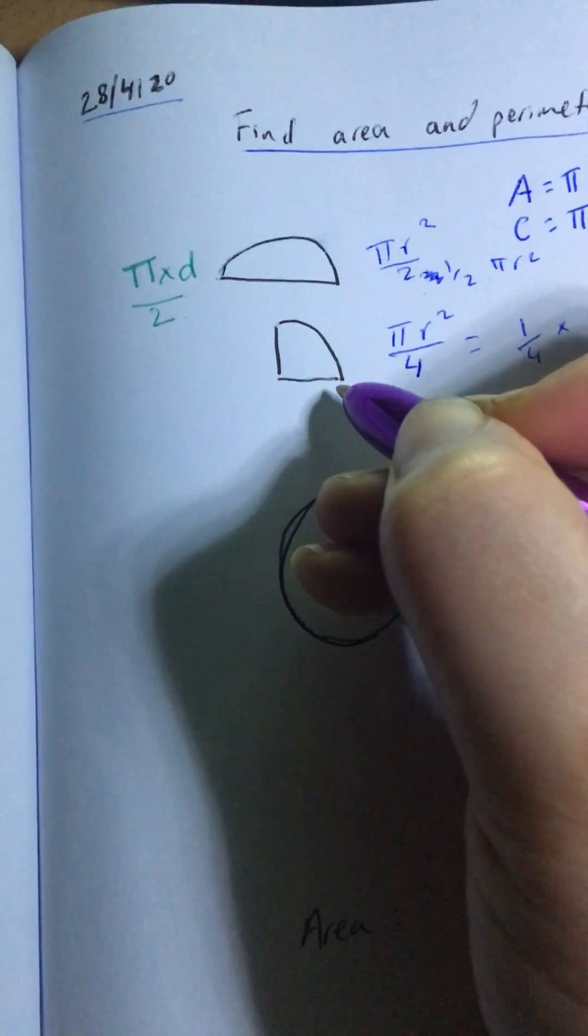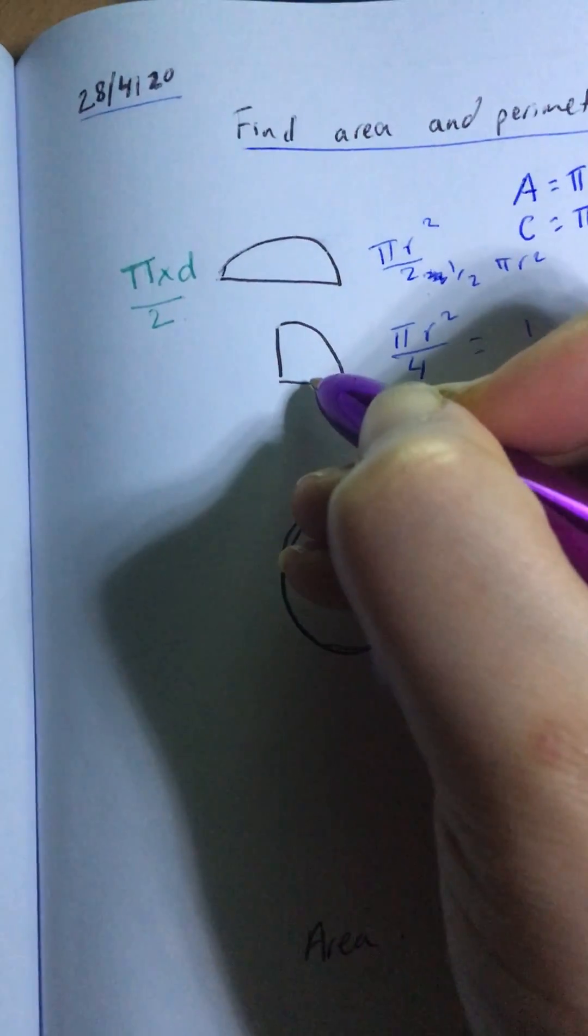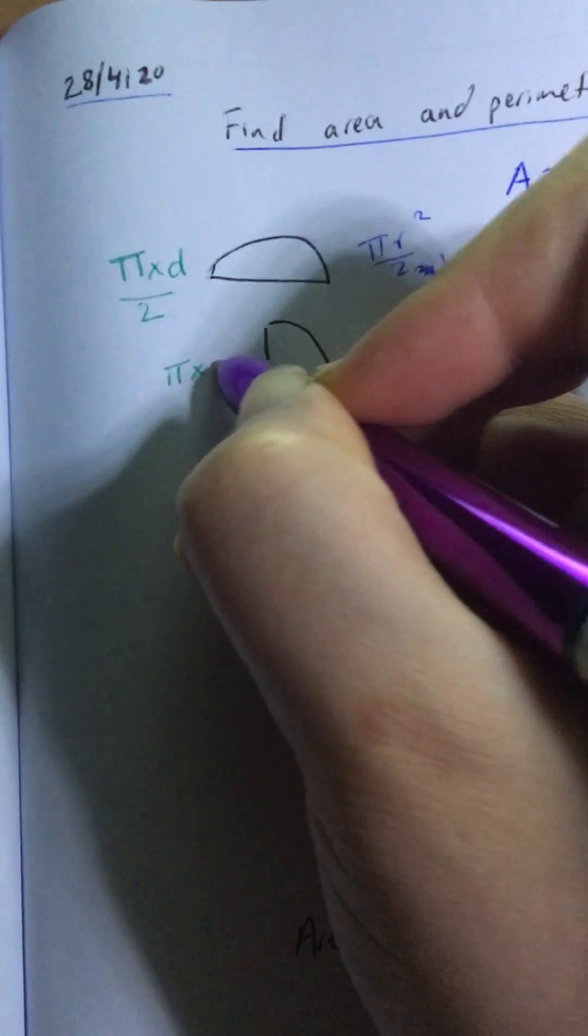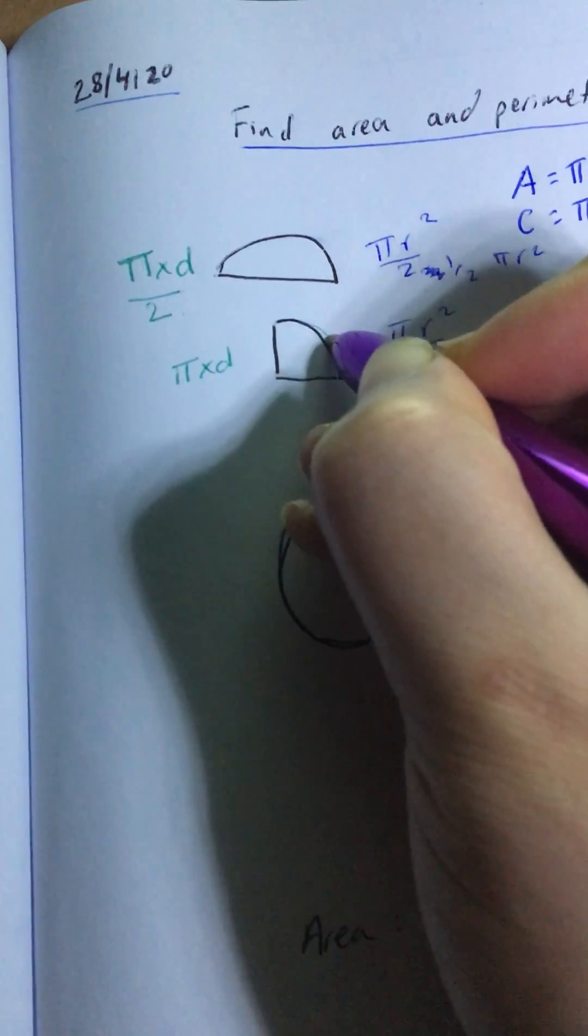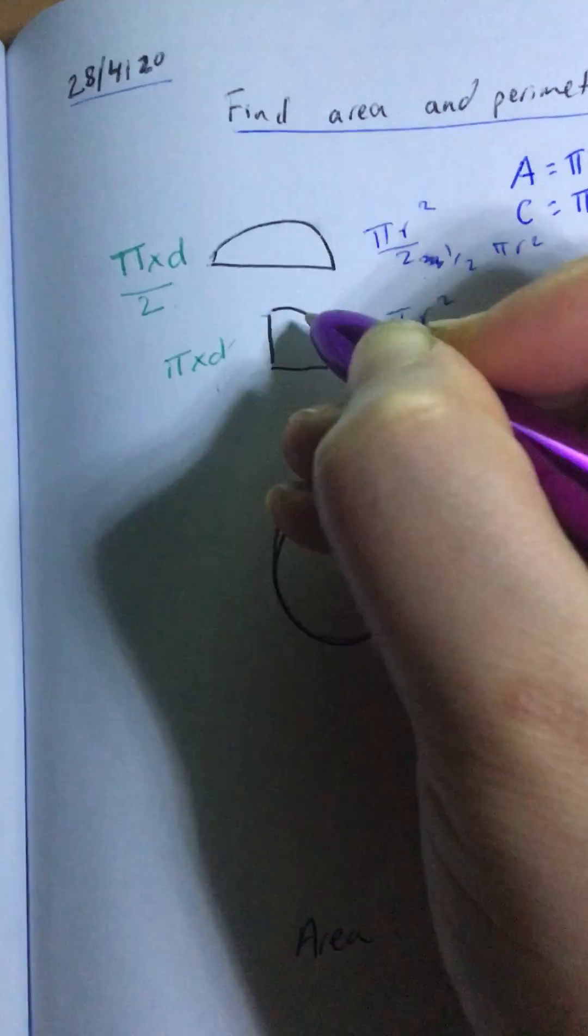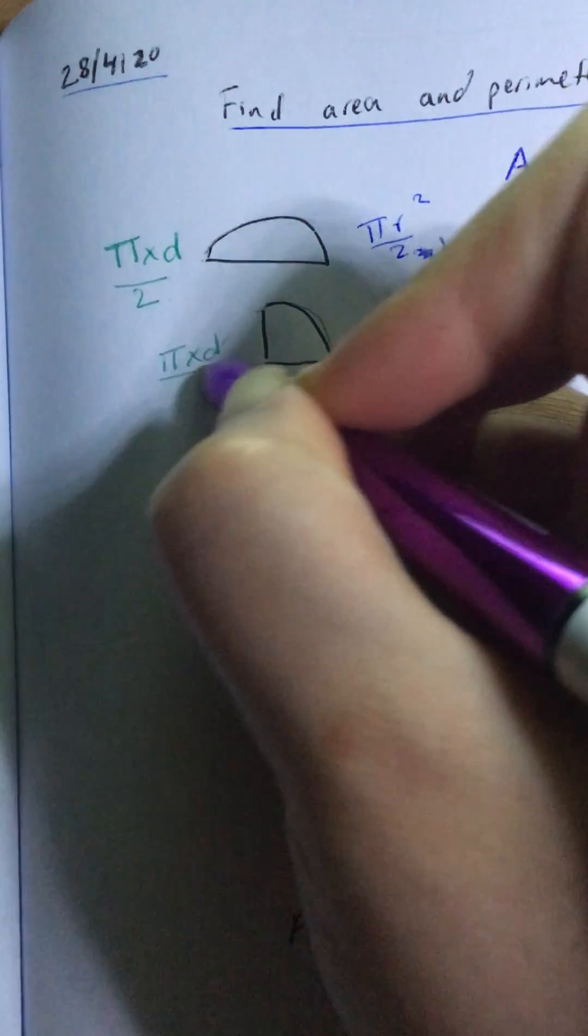Here, I do the same thing. I have a quarter of a circle. I want to find the perimeter, so I do π times d to get the whole thing. But I only have a quarter, so lastly, I divide by 4.